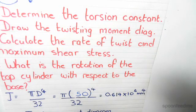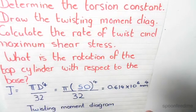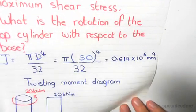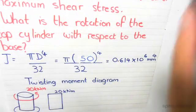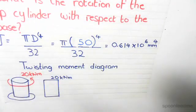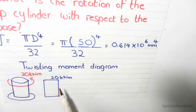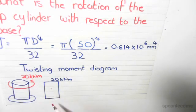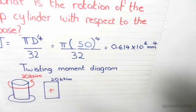Next, we were asked to draw the twisting moment diagram. Nice and easy. Since we only have one moment, as shown here, our twisting moment diagram is simply 20kNm, and we indicate it as positive because it's an anti-clockwise moment.